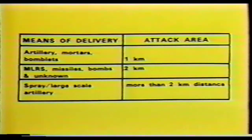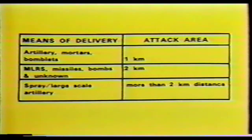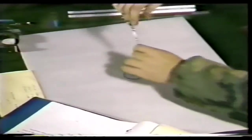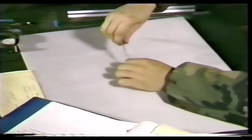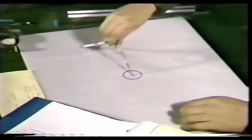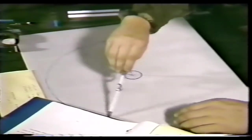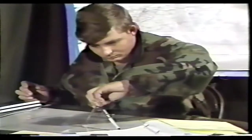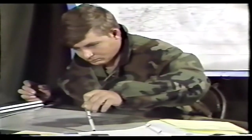From the NBC 1, we know the means of delivery was artillery. From the chart, we can see that the attack area radius of 1 kilometer applies in Case D and that the downwind hazard area will be a 10-kilometer circle. The chemical downwind hazard prediction for this type of attack is relatively simple.